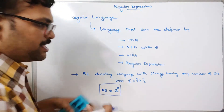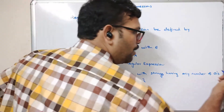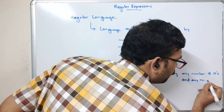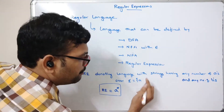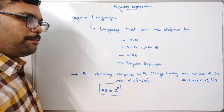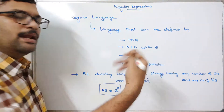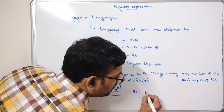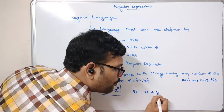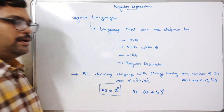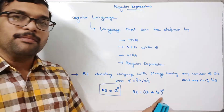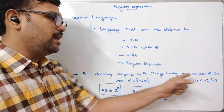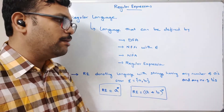Extending the example: any number of a's and any number of b's over the input symbols {a, b}. The regular expression will be any number of a's or any number of b's, so we can write it as a* b*, which accepts all strings having any number of a's and any number of b's.